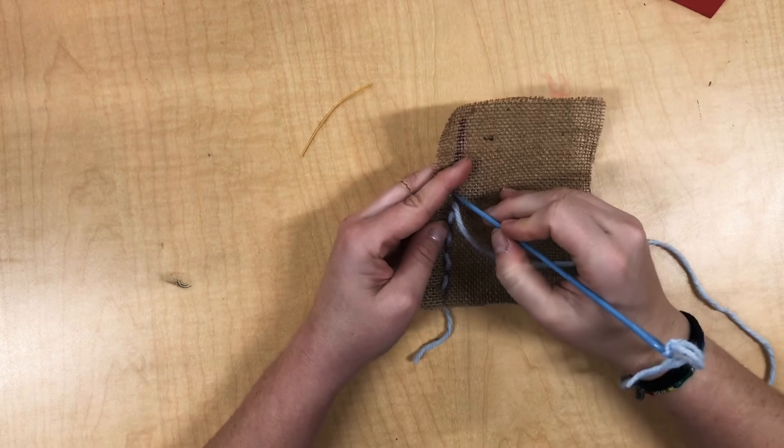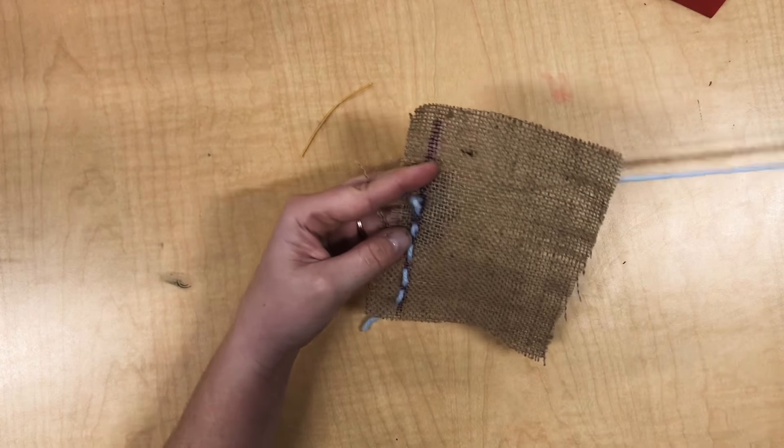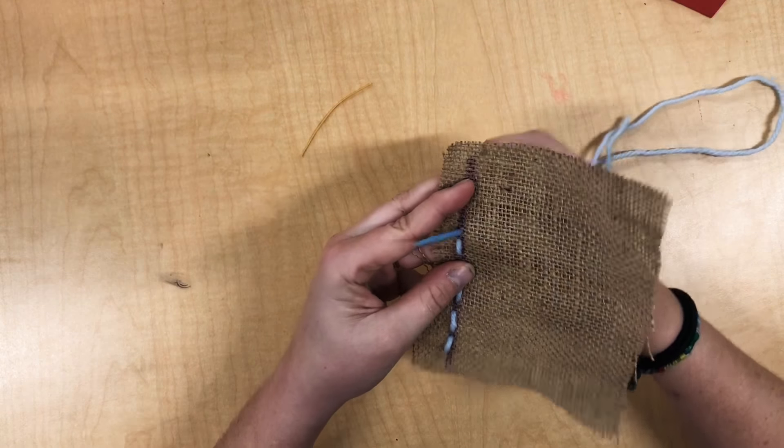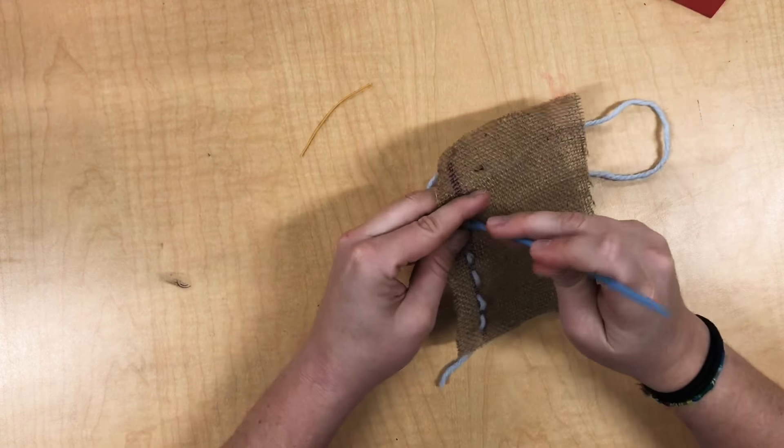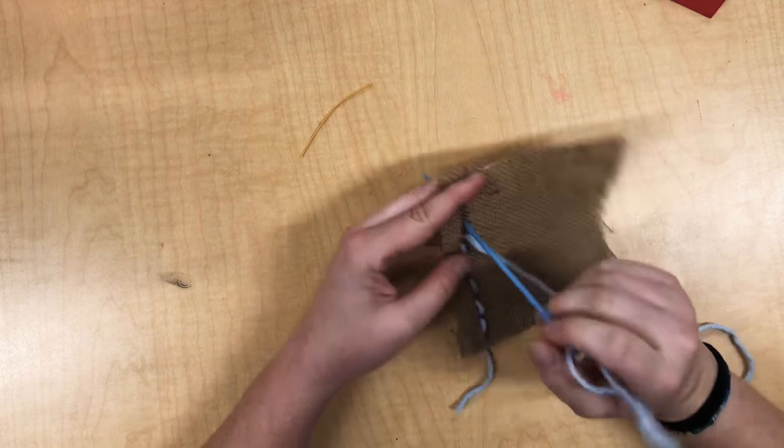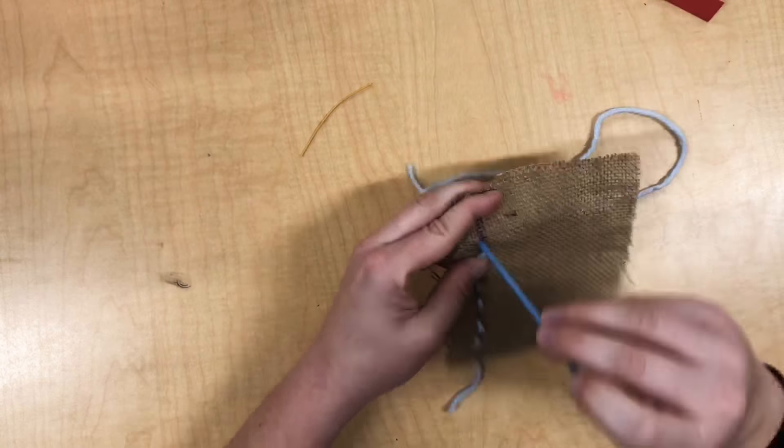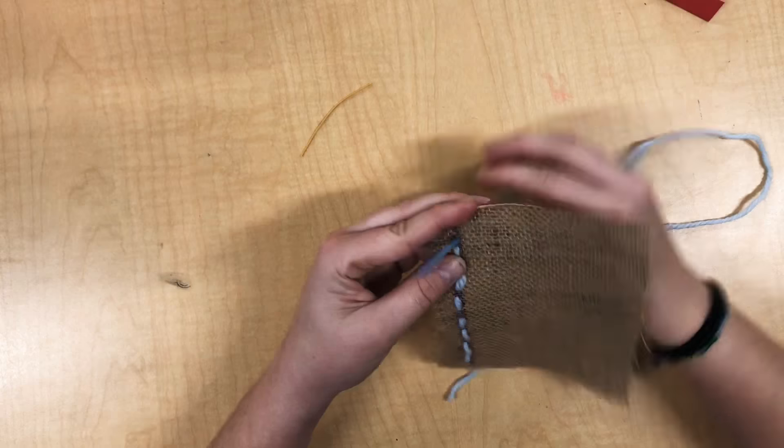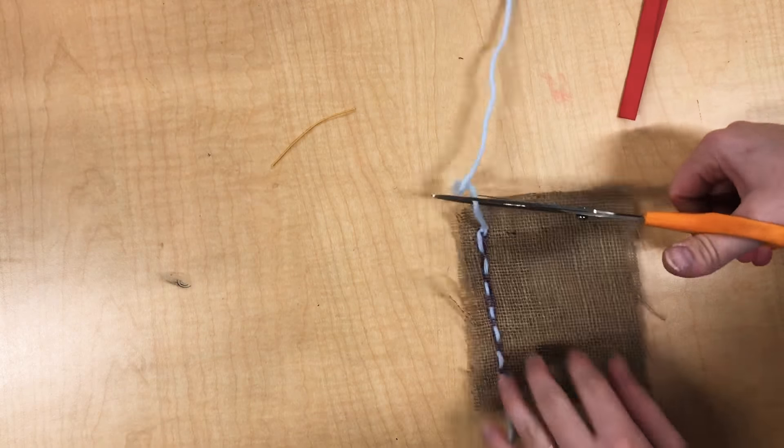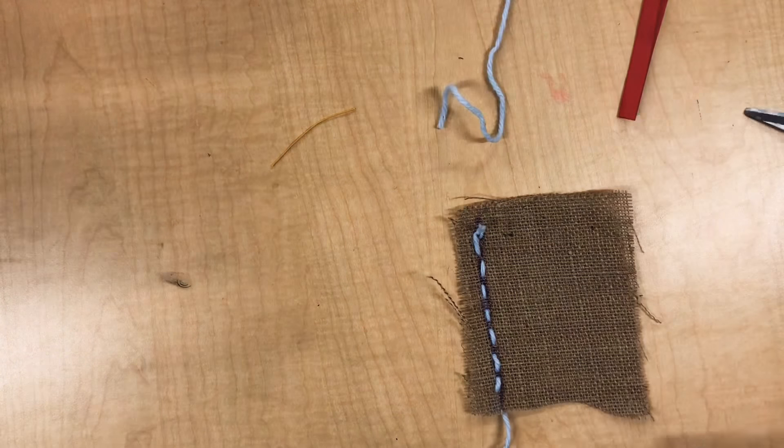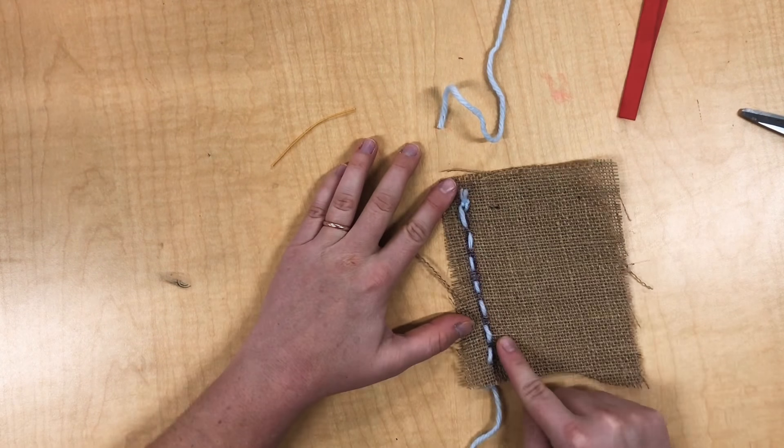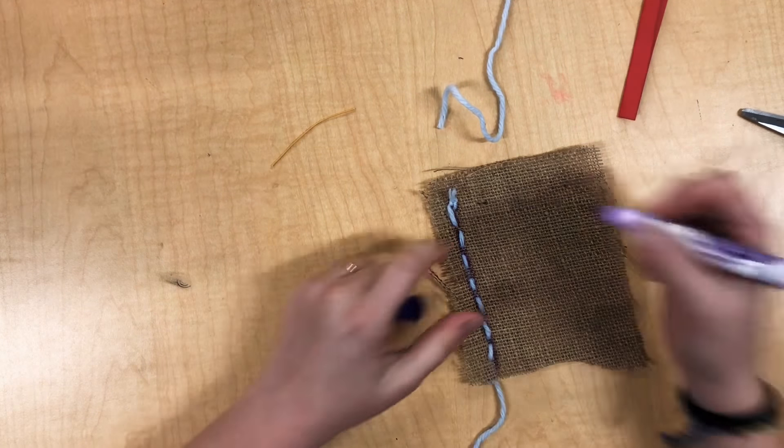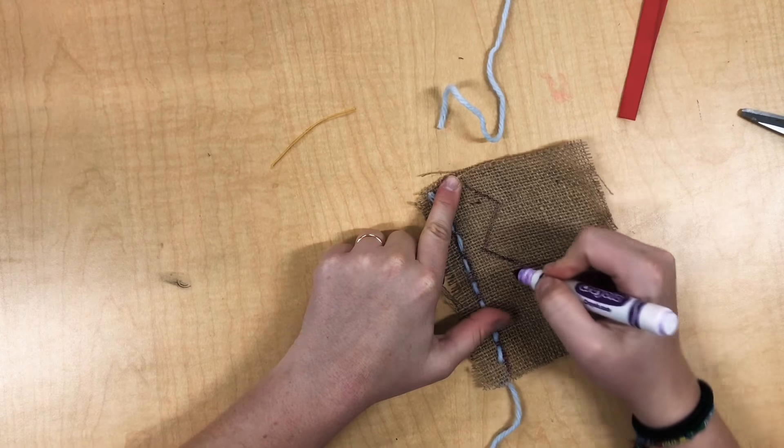And having the line drawn on your burlap will really help keep you having a nice straight stitch. Once you've got one line, you could try doing a fancier line like a zigzag.